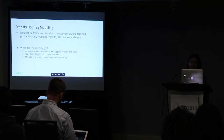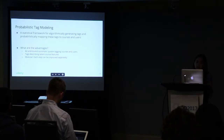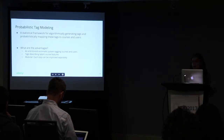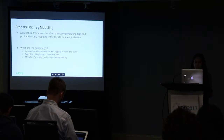Probabilistic Tag Modeling is a specific framework for automatically generating tags and mapping them to our course catalog and to our user base. It's an end-to-end framework that systematically tags courses and users. We hope the tags describe some latent course features that can be used in other applications as well, for example categorization or marketing. It's a modular framework and we are currently working on improving some of the steps, which I will briefly walk you over in the future work.